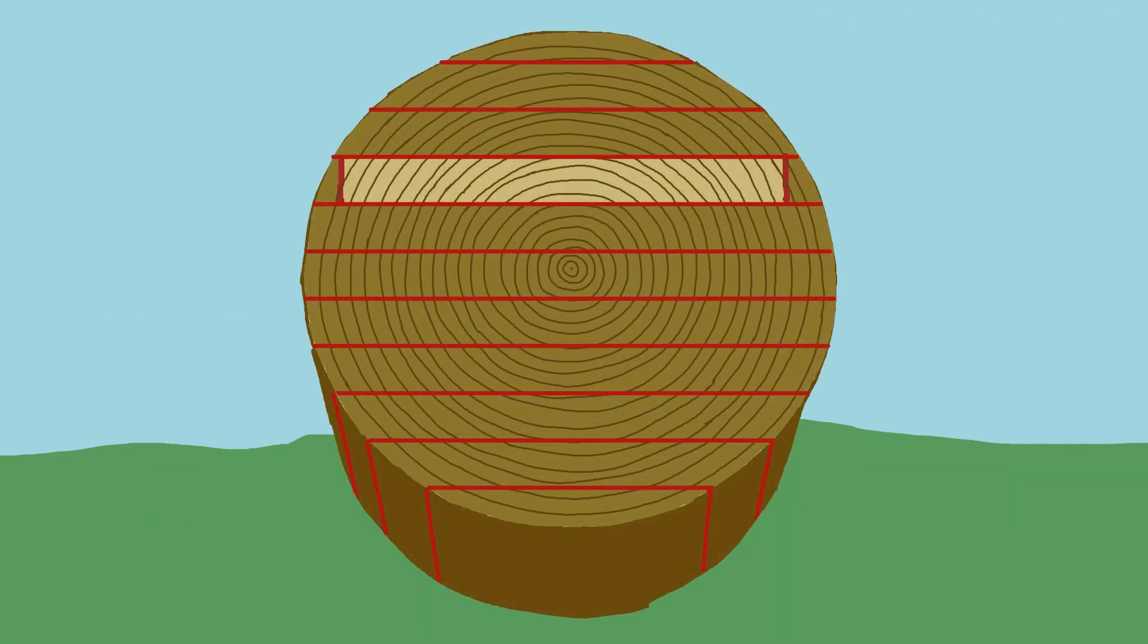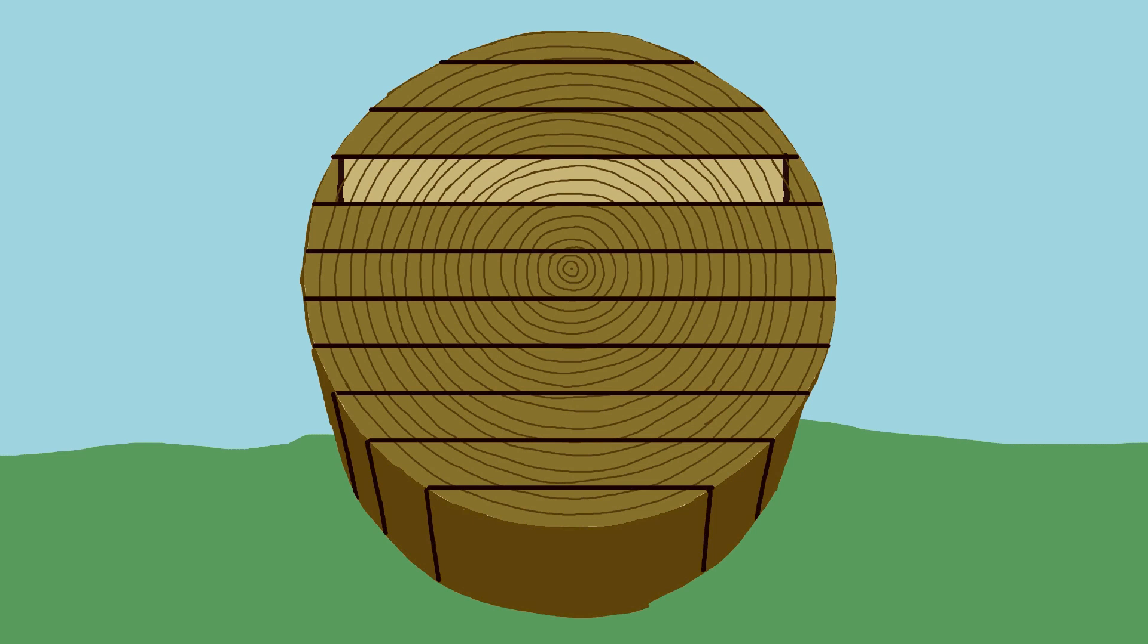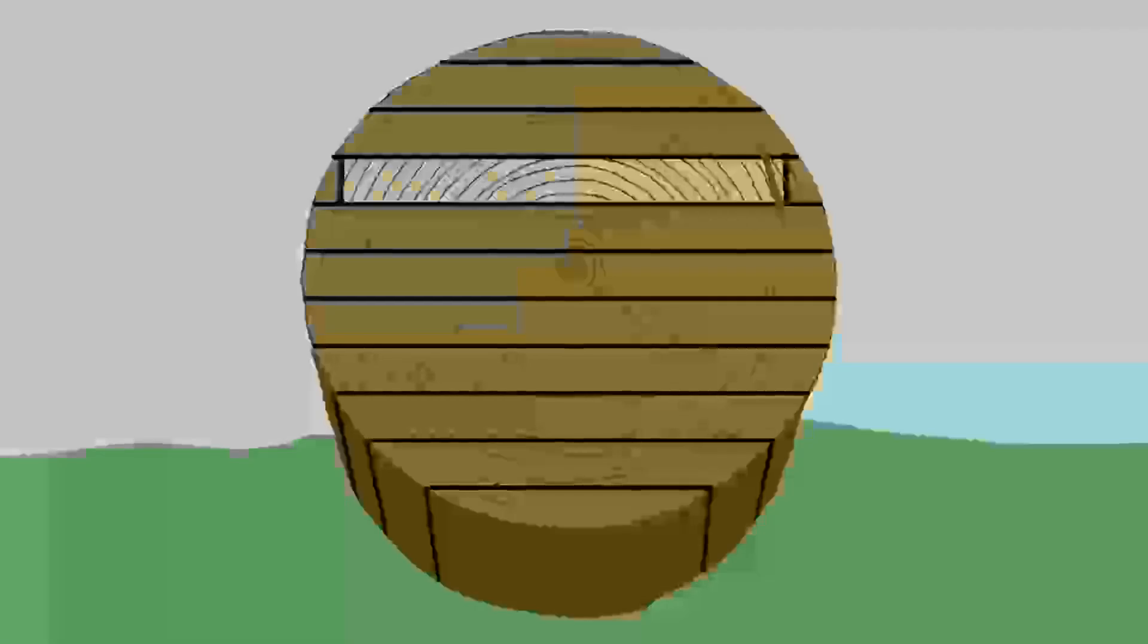If we look at the end grain of the highlighted board, and we assess the growth rings relative to the faces going from left to right, we start with quarter sawn, then shift into rift sawn, then into plain sawn, back to rift, and then back to quarter sawn.